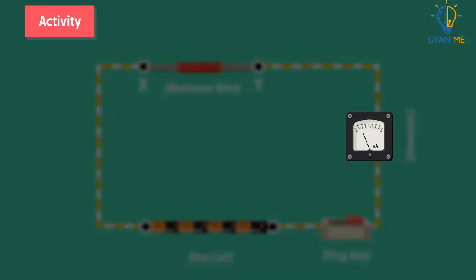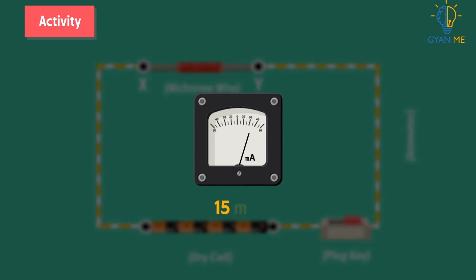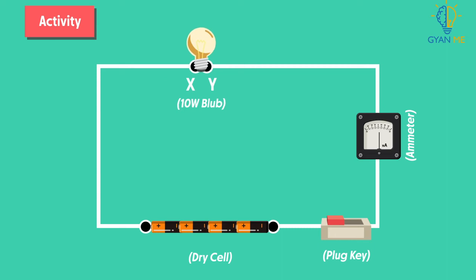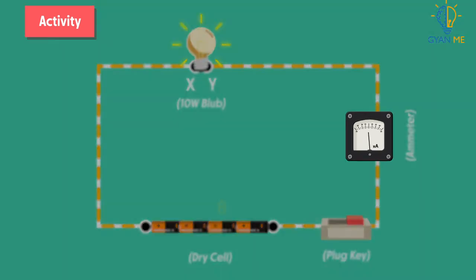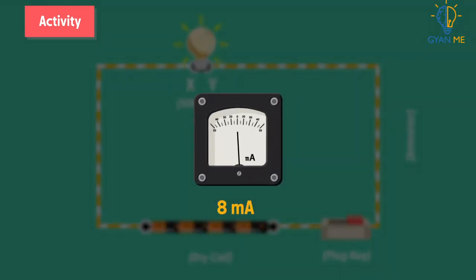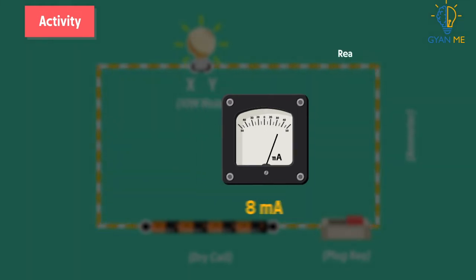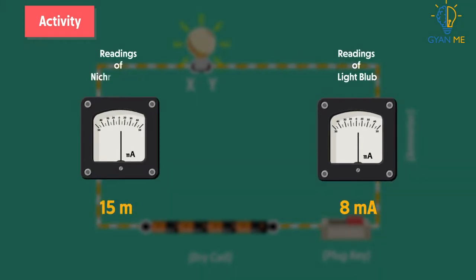Then we note down the ammeter reading. We repeat the same process for the 10 watt bulb and note down the ammeter reading. Are the ammeter readings different for different components connected in the gap XY?